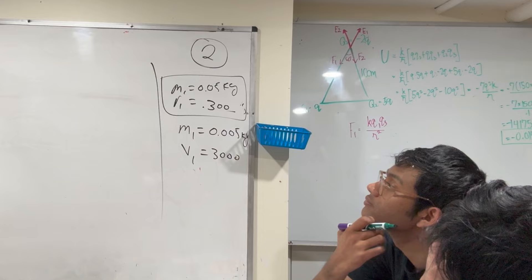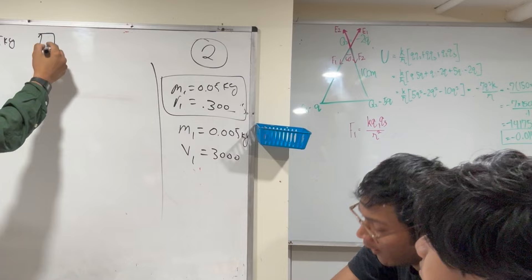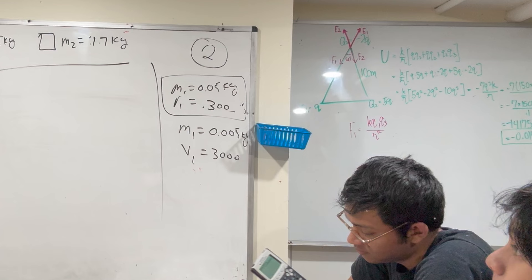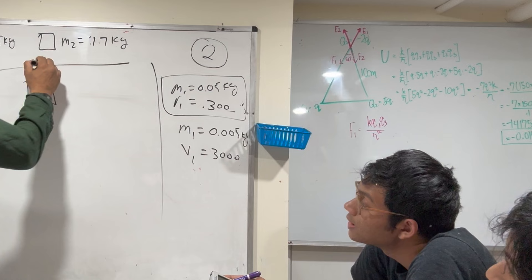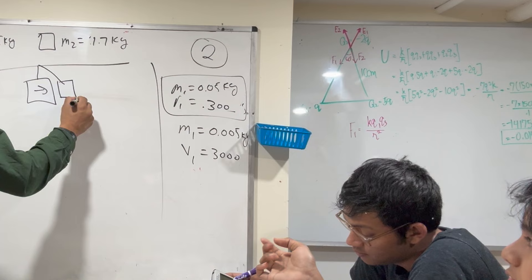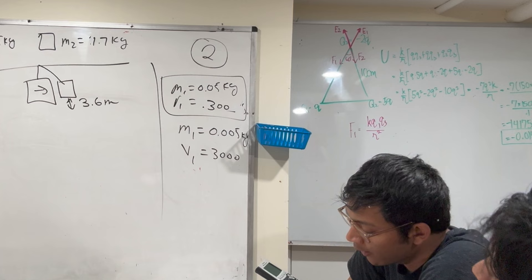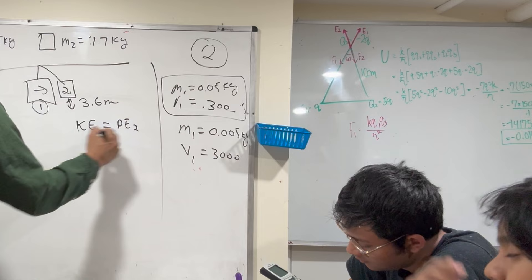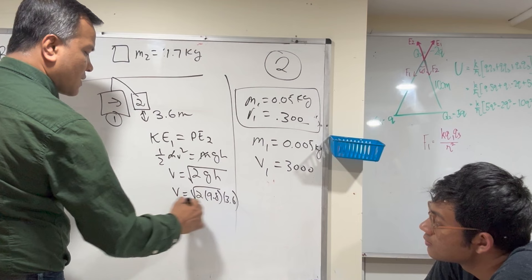Bullet mass m1 is 0.005 kilograms, velocity v1 we don't know. Waiting to catch the bullet is mass m2 = 1.7 kilograms — that's before. After the bullet embeds, this mass hangs on a string and swings back and forth. The kinetic energy gets converted to potential energy due to height. So using conservation of energy: half mv² = mgh, giving velocity = √(2 × 9.8 × 3.6), so velocity is 8.4 meters per second.